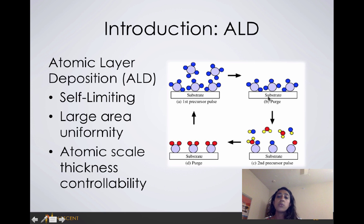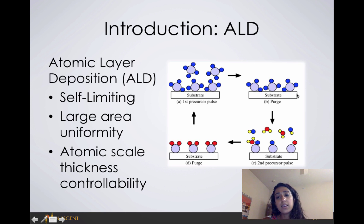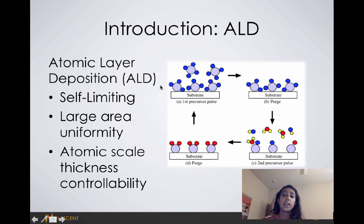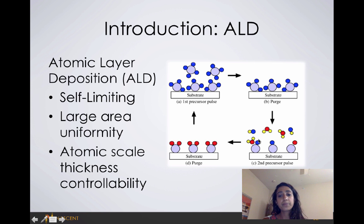Then we purge the reactor, which means we take away any of the excess gas, and we're left with just one layer of TD-MAT that has reacted with the surface. The ammonia gas only reacts where the TD-MAT has reacted. Finally, we purge again, and what we're left with is our titanium nitride film.